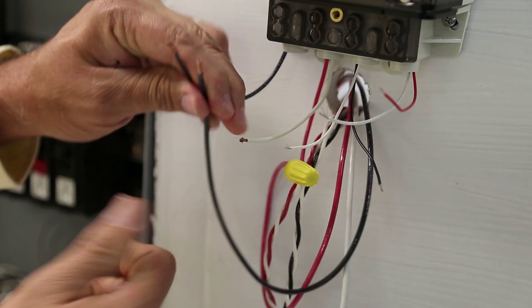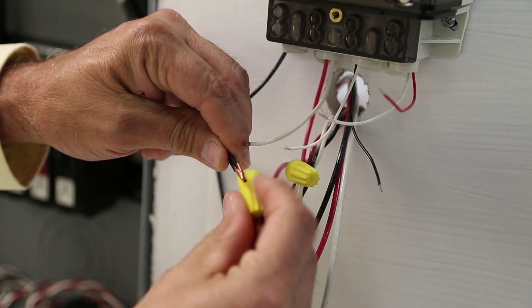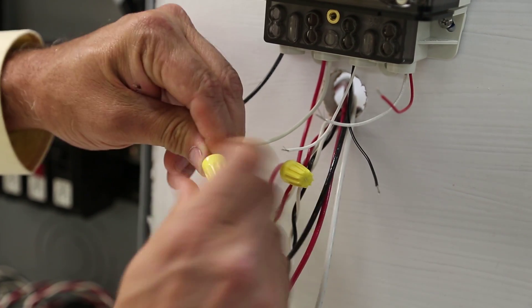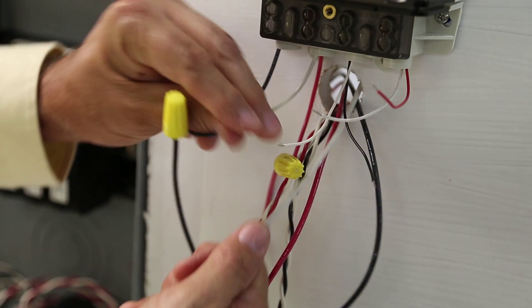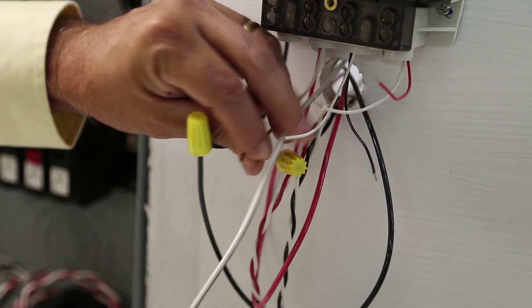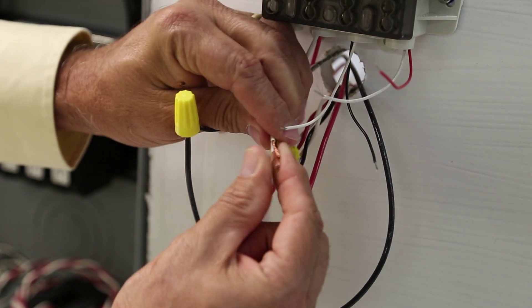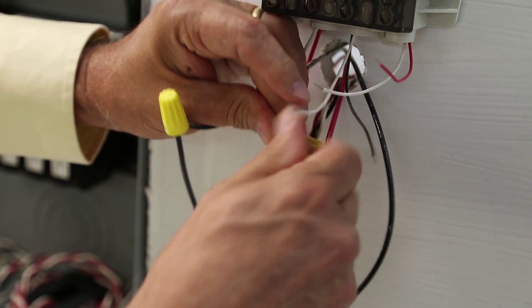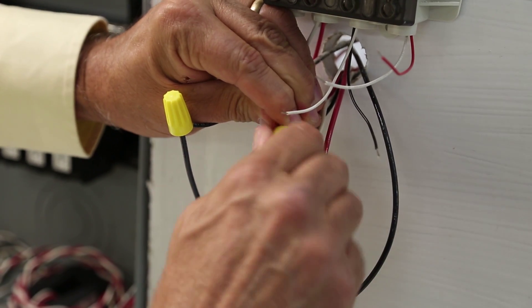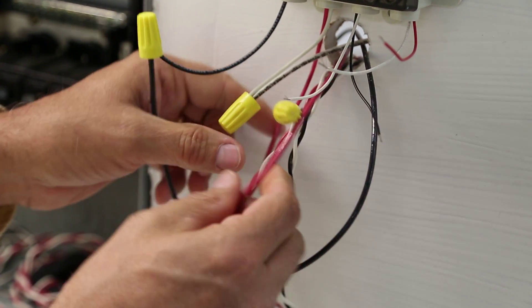The black voltage lead, these are the heavy leads, to be connected. And your neutral lead to be connected to the heavier white lead coming out of the meter. Those are your voltage connections.